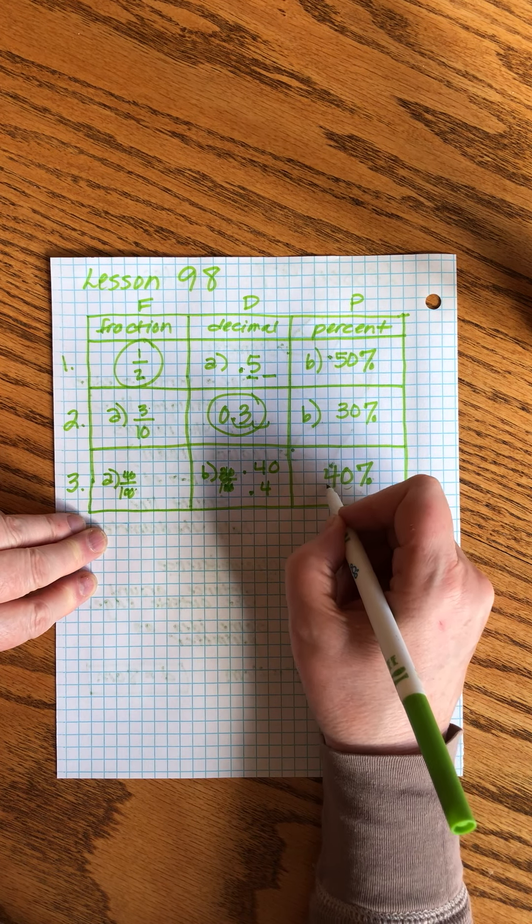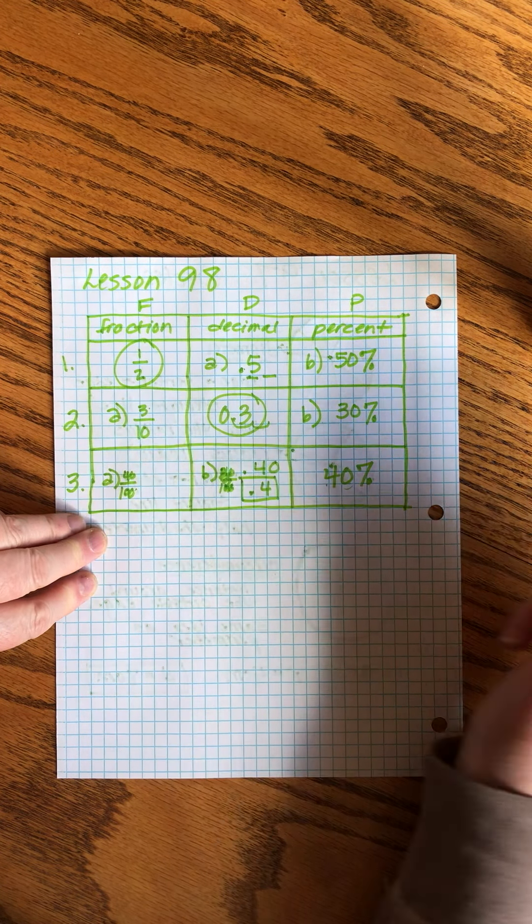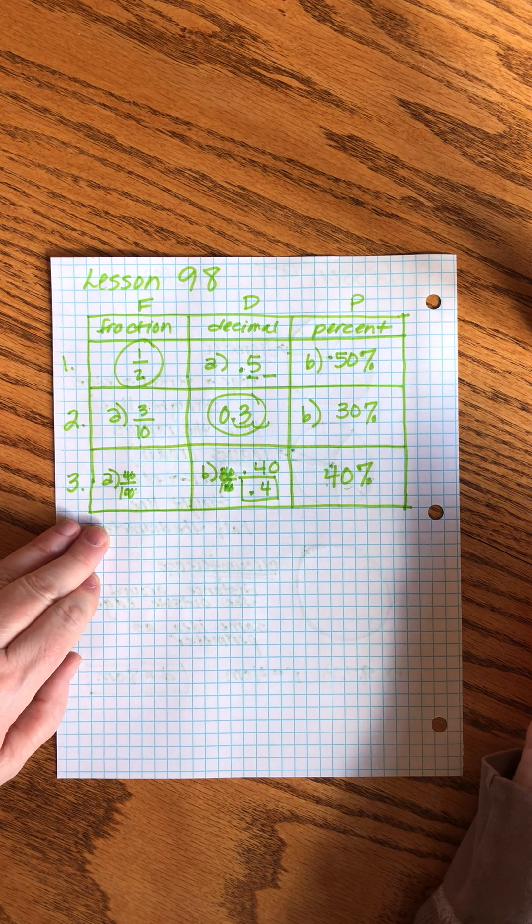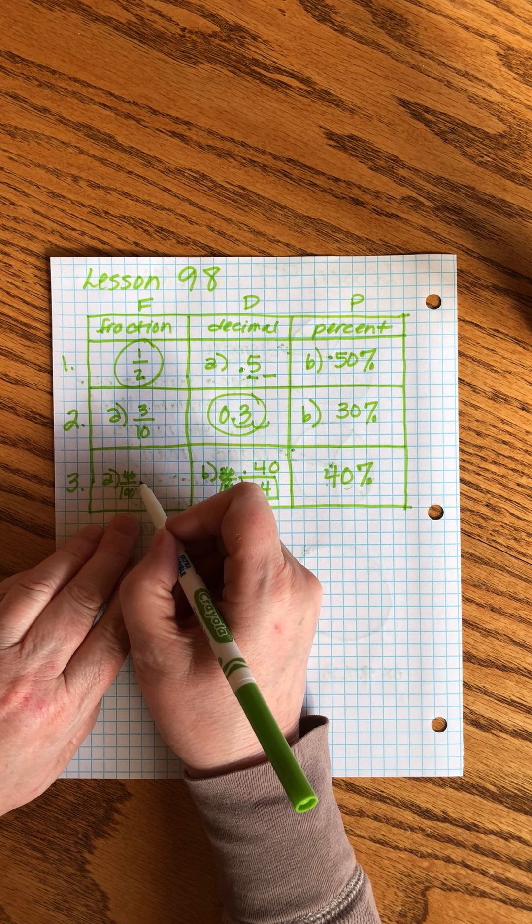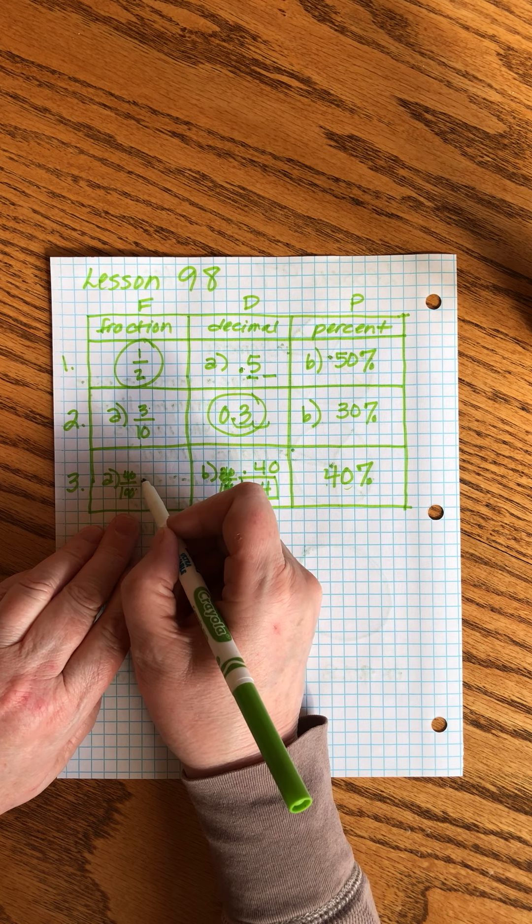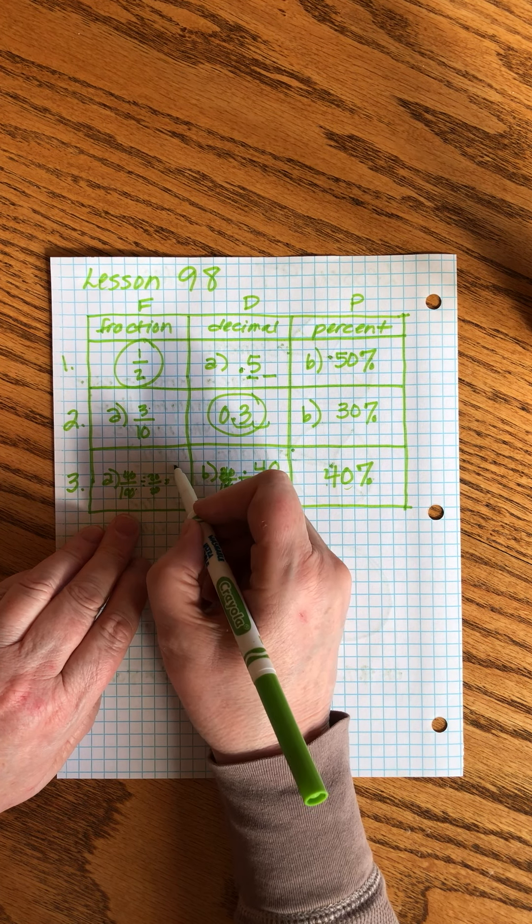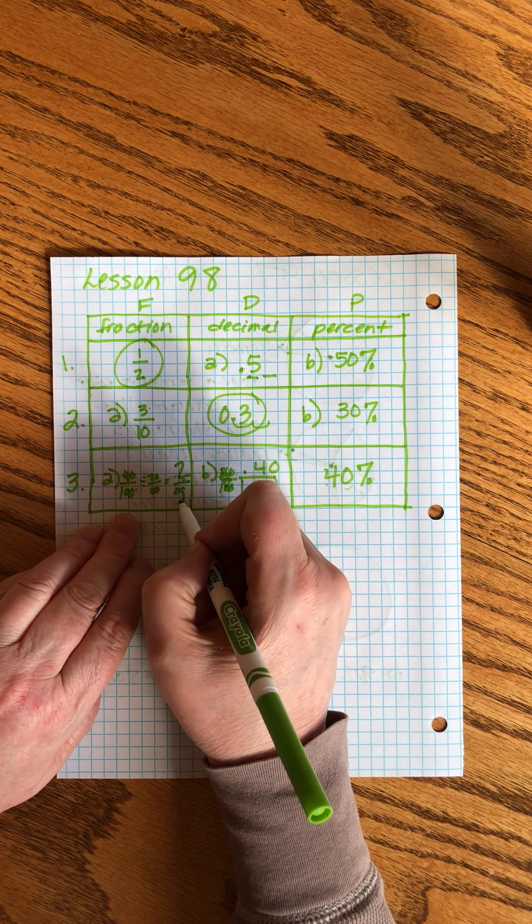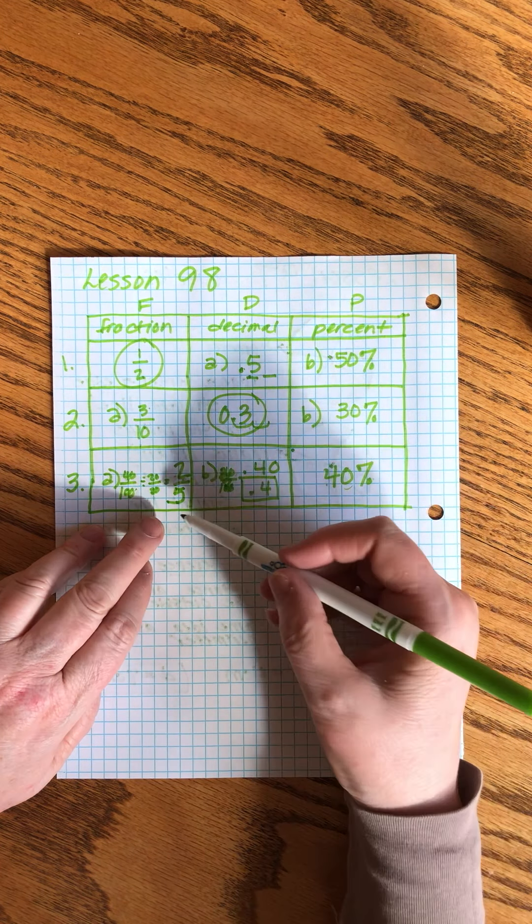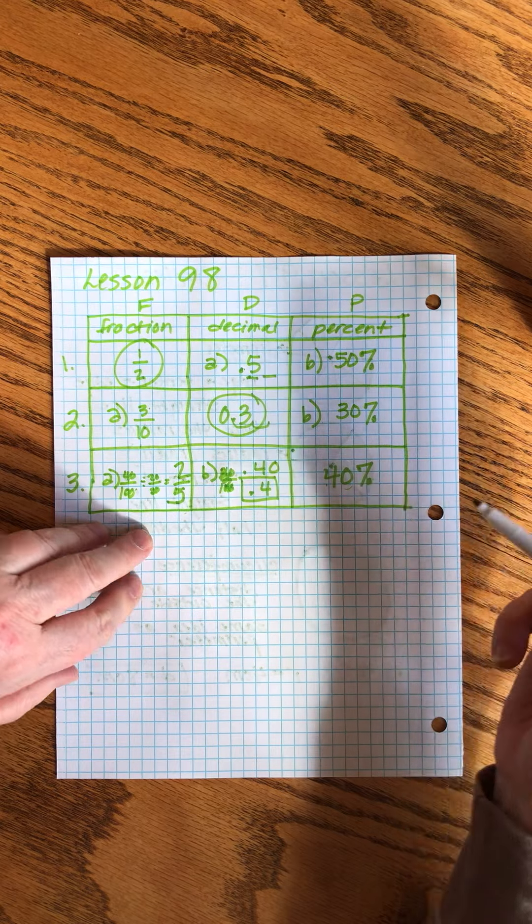This I know is 40 over 100. This should be 0.40 or 0.4, I just move the decimal place so I'm going to use that for my answer here. Then 40 over 100, I'm going to divide each of these by 20 because I can see that 20 is going to go into both, and that gives me 2 over 5 for my final answer. We always reduce as much as we can in these.